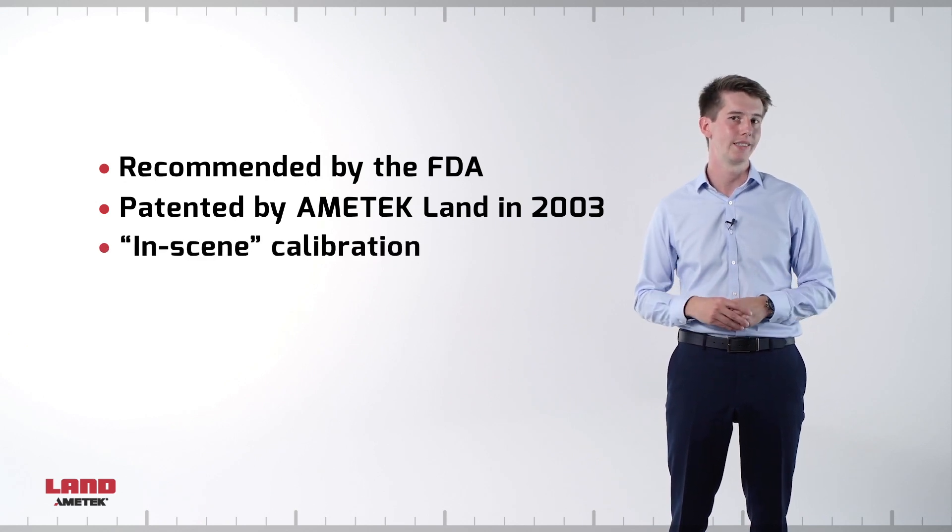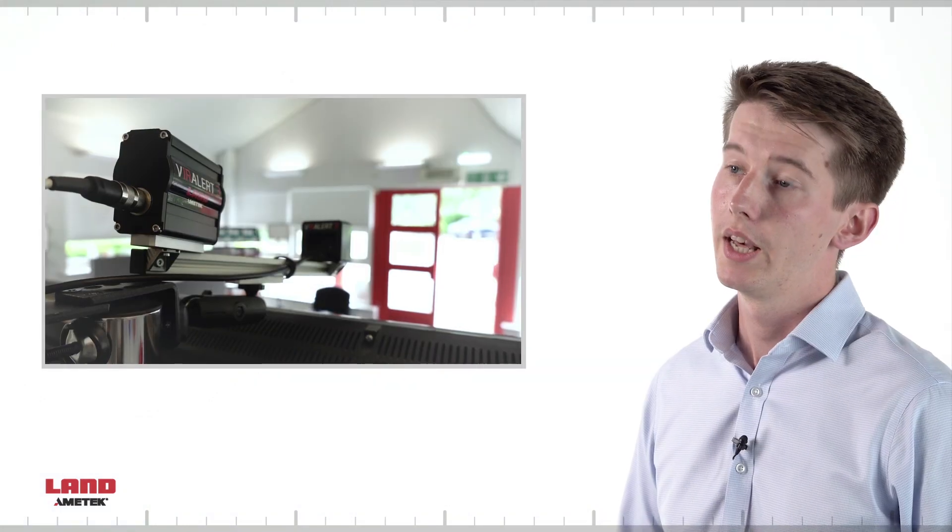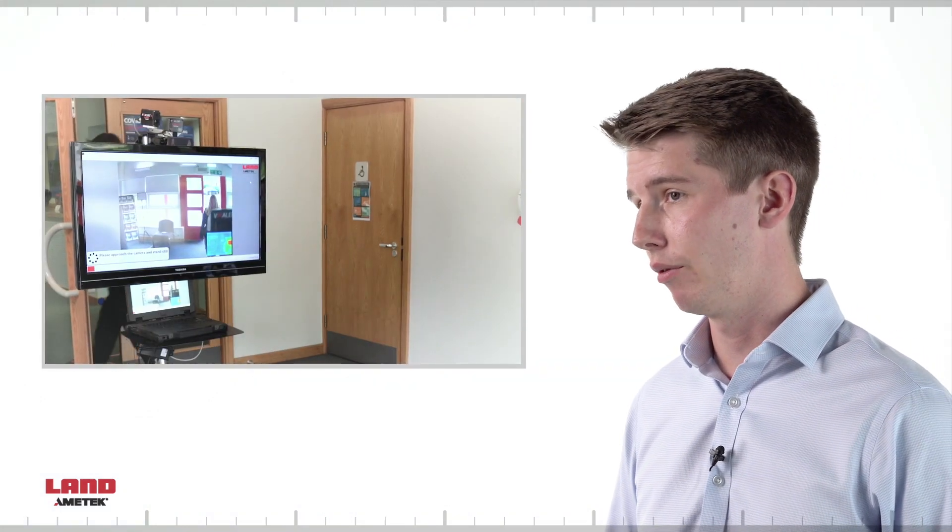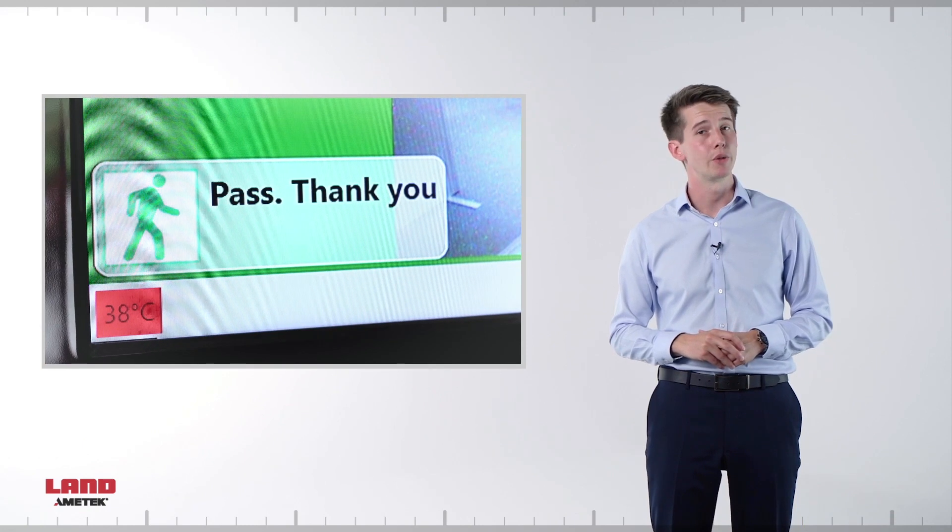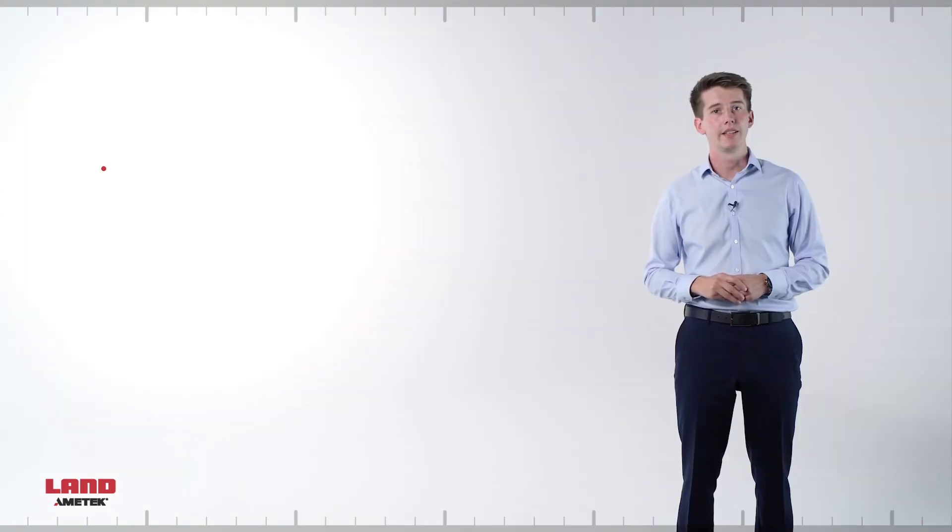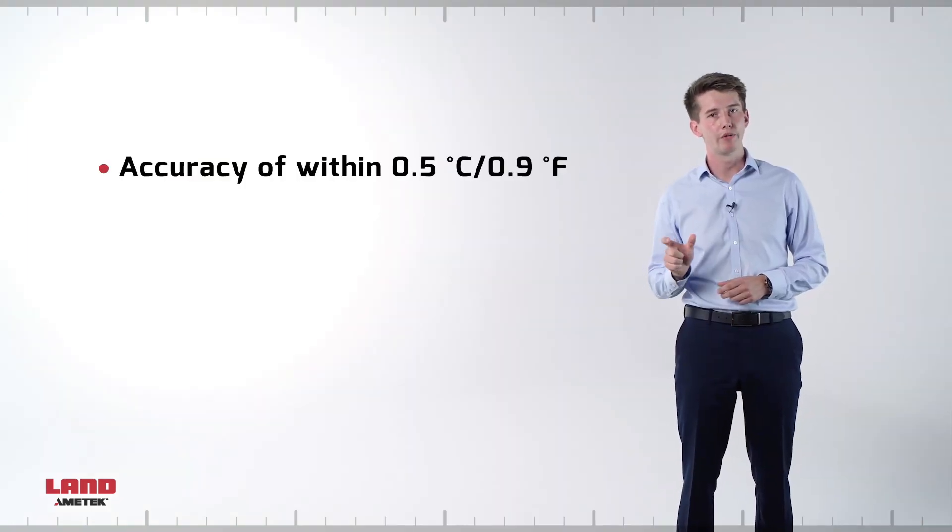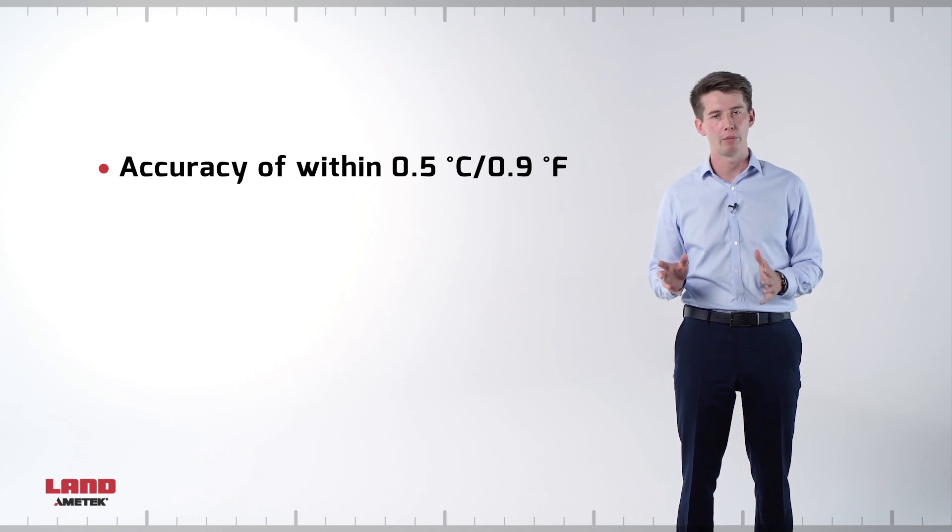It's also known as in-scene calibration. The black body provides a highly accurate reference source in the field of view of the camera. This enables the system to overcome the accuracy challenges associated with thermal imaging when measuring temperatures. This is achieved using a feedback loop and software algorithms. It delivers accuracy to within half a degree Celsius or 0.9 degrees Fahrenheit in real world applications and conditions.